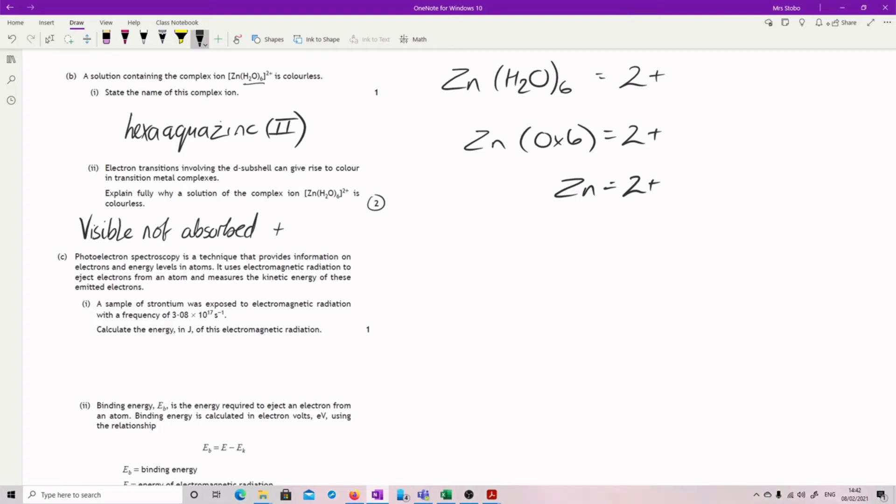So the other issue with zinc though, is that zinc cannot absorb in this because it doesn't have the ability to absorb in the orbitals that allow this to happen, which basically means your d orbitals are full. We have nothing that will allow us to do a d to d subshell split that would allow us to absorb in the visible.